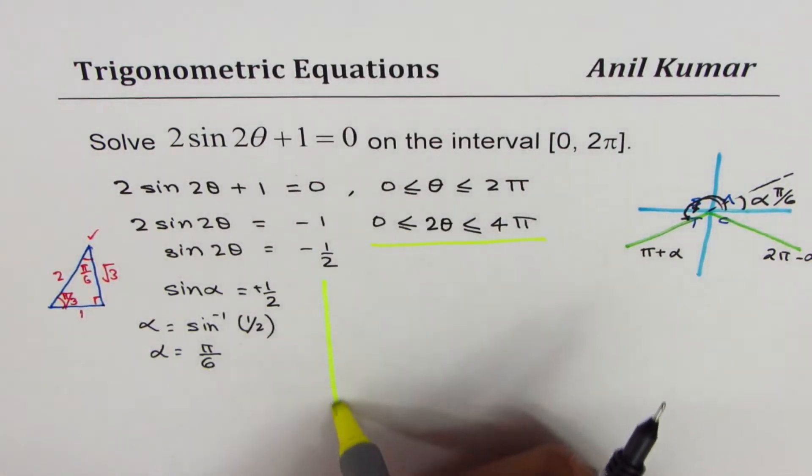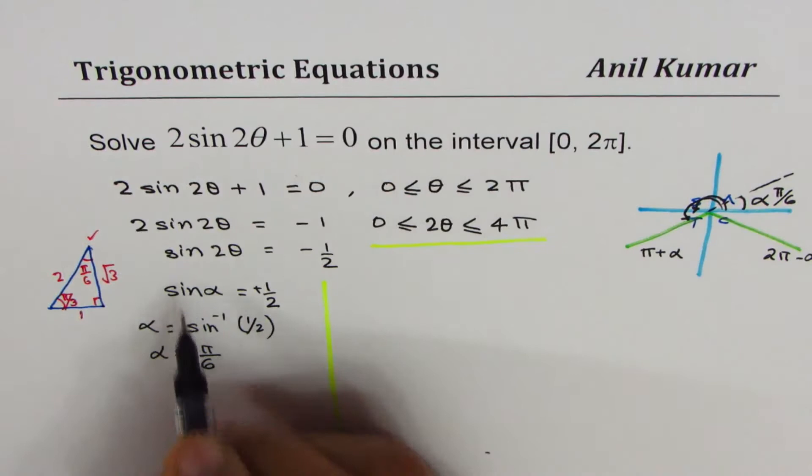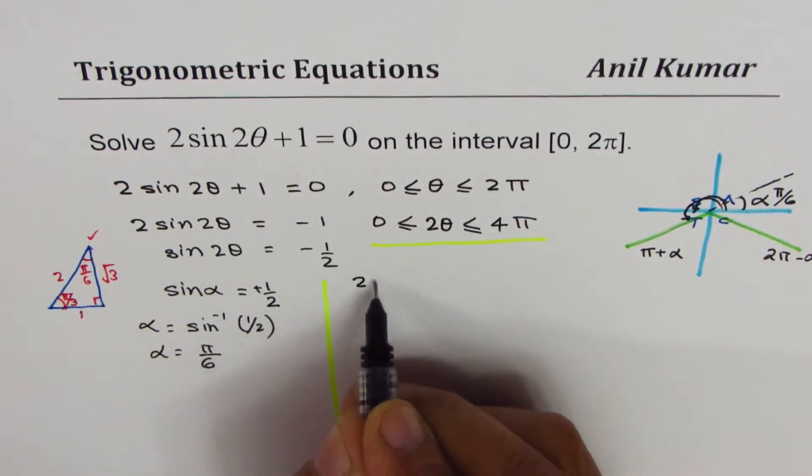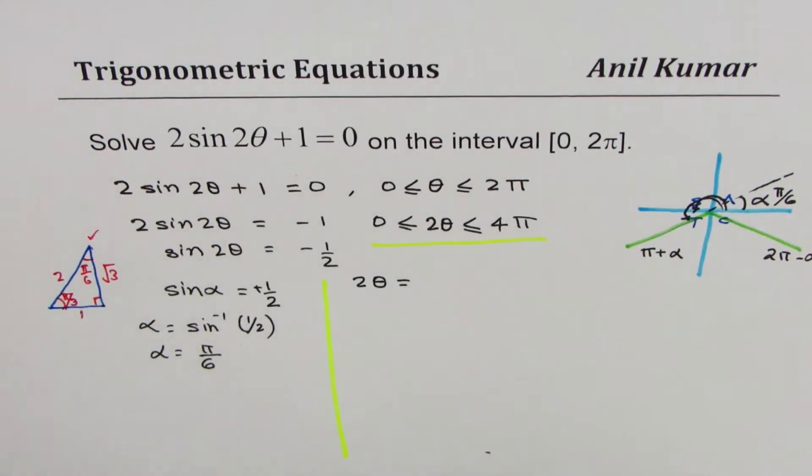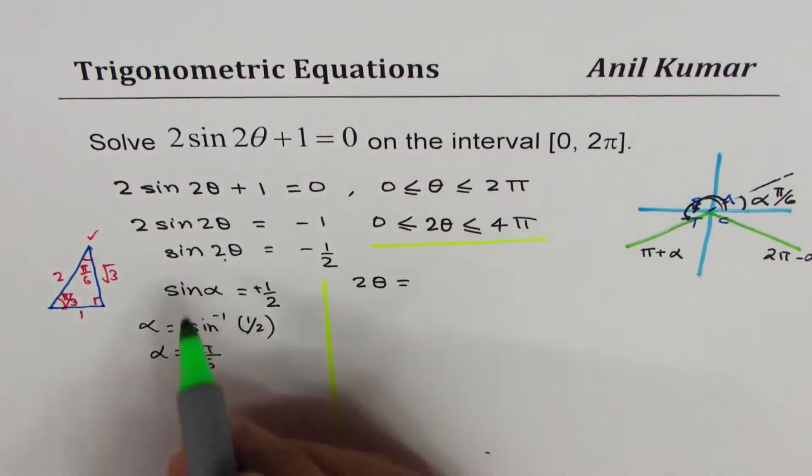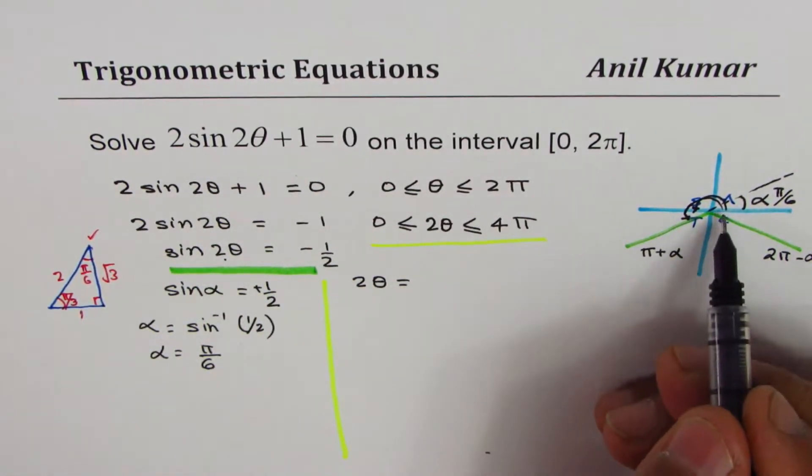α is π/6, so when we say sin 2θ is minus half, that means 2θ should be equal to what? We're trying to solve this one, so 2θ is...